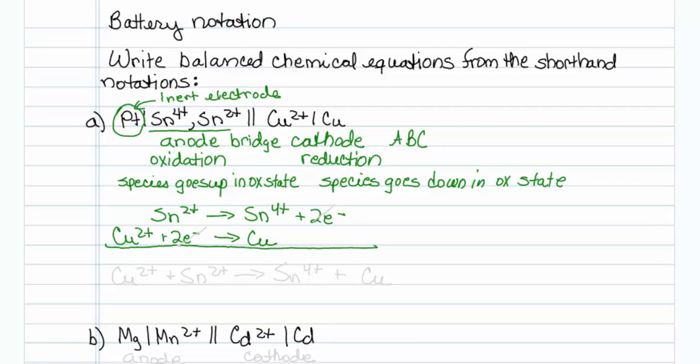Then it's just a matter of adding these two, and conveniently they both have two electrons, so they cancel out very nicely. My net redox reaction is copper 2 plus plus tin 2 plus going to tin 4 plus plus copper. That is my net spontaneous redox reaction.